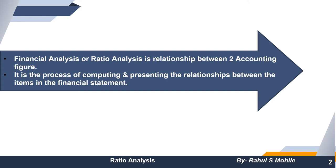Ratio analysis is the process of computing and presenting the relationships between items in the financial statements — the profit and loss account and the balance sheet. For example, we have different types of operating expenses such as office and administration, selling and distribution, and factory overheads. We take the total of all these expenses and compare them with sales. If we compare a huge amount such as one crore with sales of 50 crores, it becomes very difficult to understand and interpret.